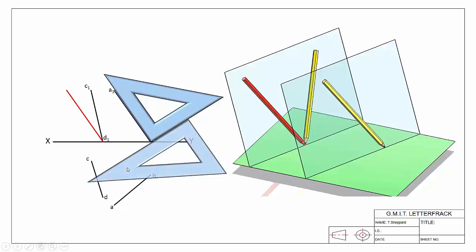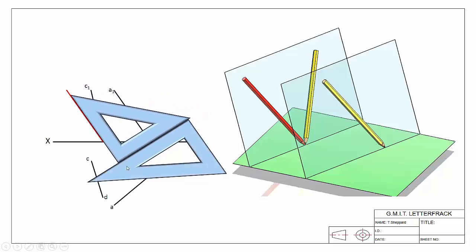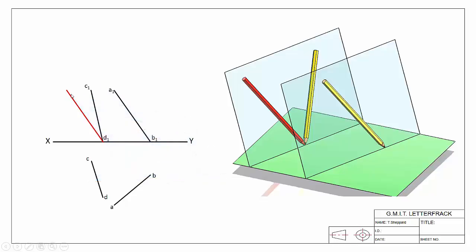There's the angle of our copied line — the distance doesn't matter for the moment, just the angle. This is our copy of line AB in elevation. Since we've copied the elevation, all we need to do is copy it in plan as well.